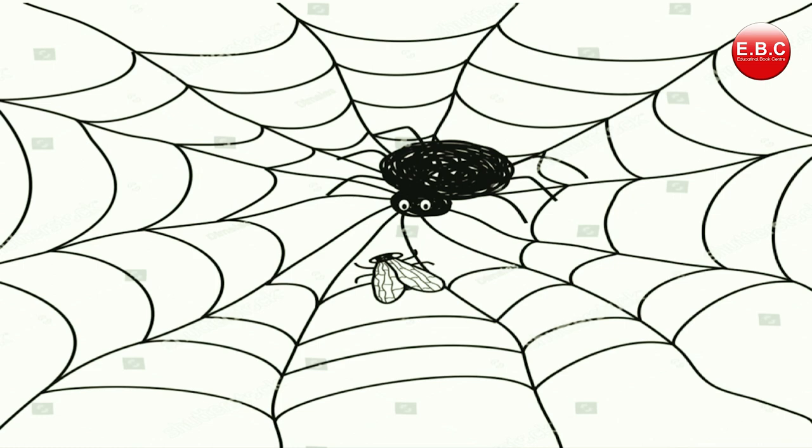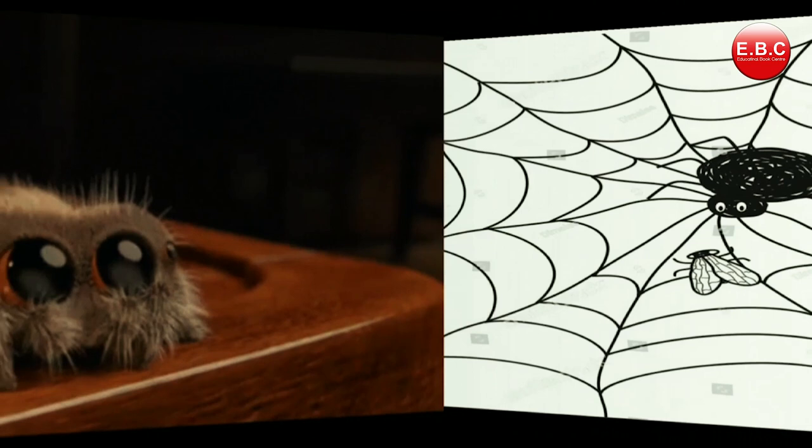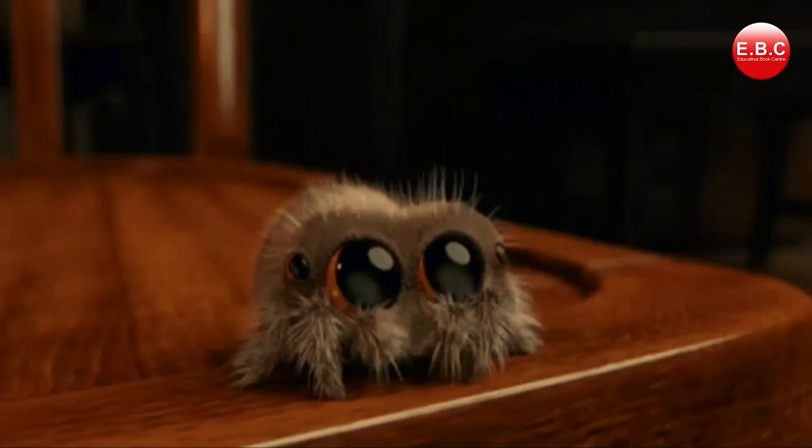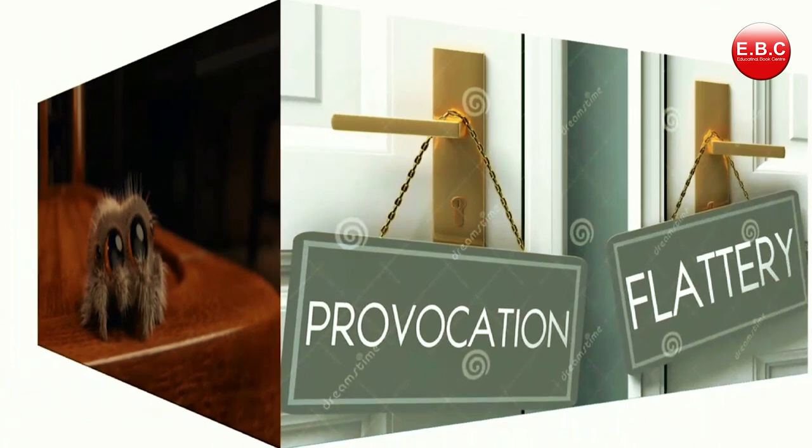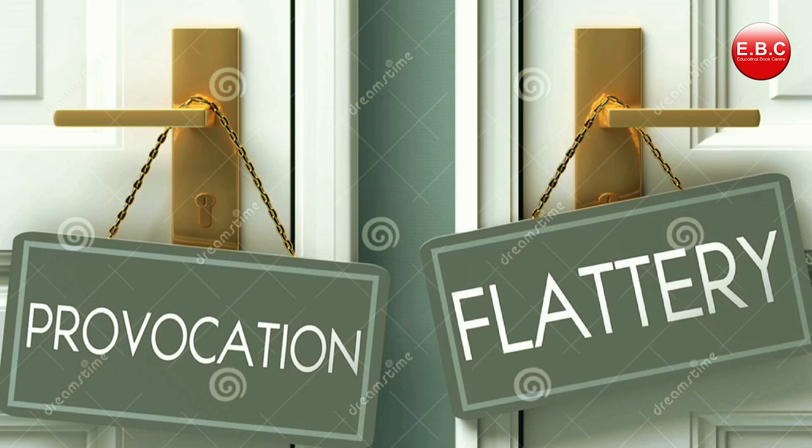In the third stanza, the spider calls the fly his friend and asks what he should do to prove his affection for her. He tries to tempt her with the offer of nice food from his pantry, but the fly replies that she does not wish to see whatever lies there.